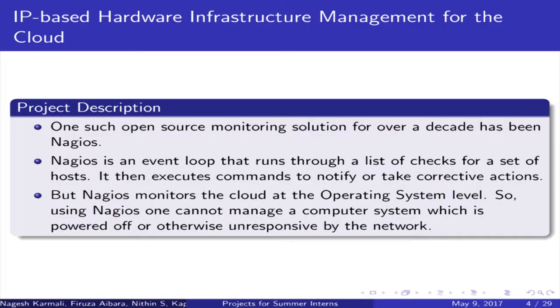There is already one such tool called Nagios. It is quite old and very popular. Nagios keeps checking resources and whenever there is a failure or a change, it notifies or takes a set of recorded actions. But the drawback with Nagios is that it performs at an operating system level, which means that if the entire system goes down, Nagios cannot do anything about it — it can only notify. It cannot reboot a system that is not responding or already shut down.